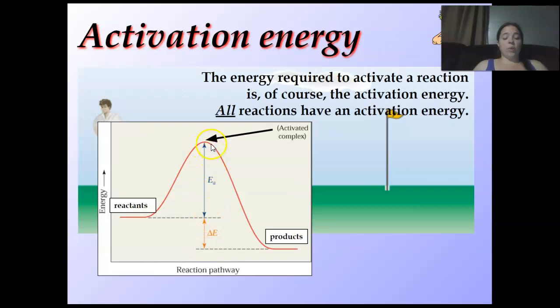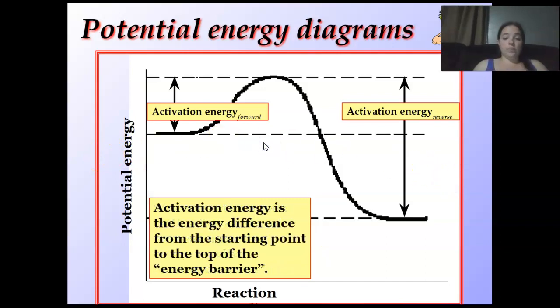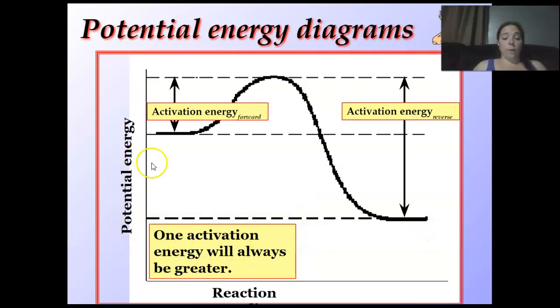The activated complex all the way up to that bump. Activation energy of the forward is just from here to the bump. Of the reverse is from here to the bump. Since the reaction have both forward and reverse direction, every reaction has two activations. You have the forward and the reverse. The activation energy is the energy difference from the starting point to the top of the energy barrier for the forward. One activation energy will always be greater. Looking at this, this is little, this is greater. One is always going to have a greater amount. Because if I reverse it, if I go back that way, the forward, if I go back this way, the forward is going to have more than the reverse.